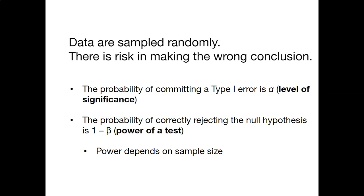So our data are always sampled randomly. There is risk in making the wrong conclusion. Remember back to that table we saw that talked about type 1 and type 2 error. The probability of committing a type 1 error is alpha, or our level of significance. Remember then that alpha is typically set to 0.05 for most of our statistical analyses.